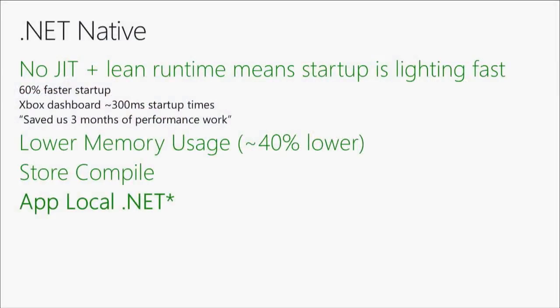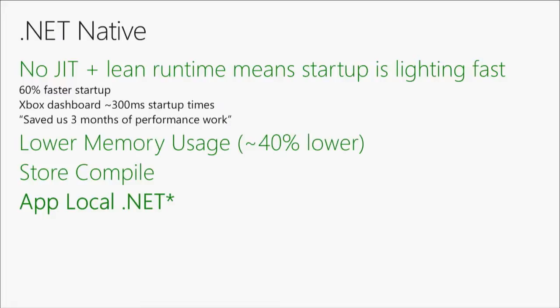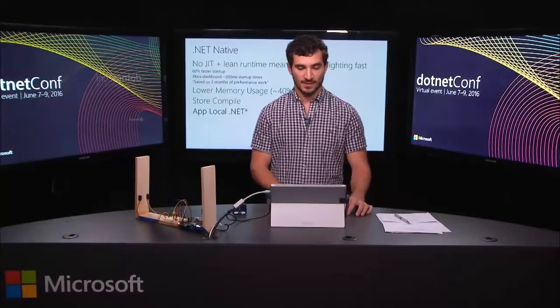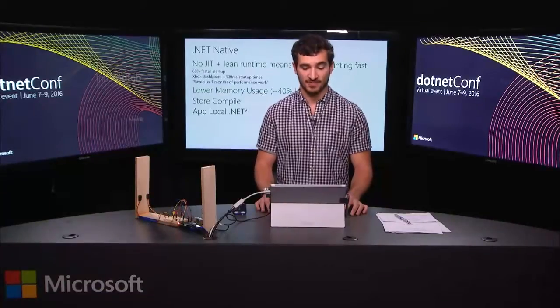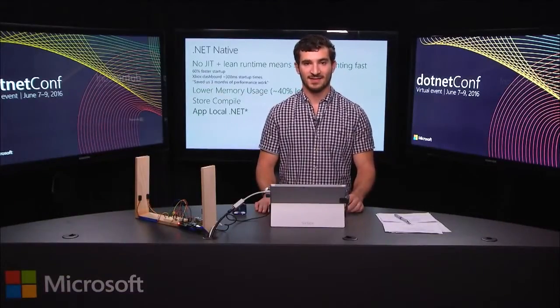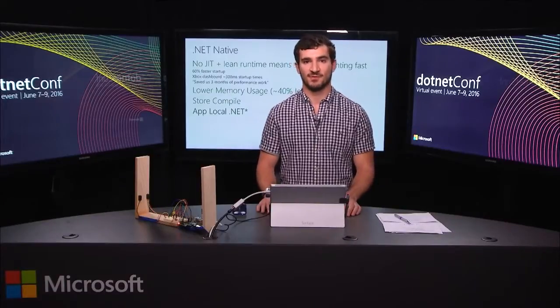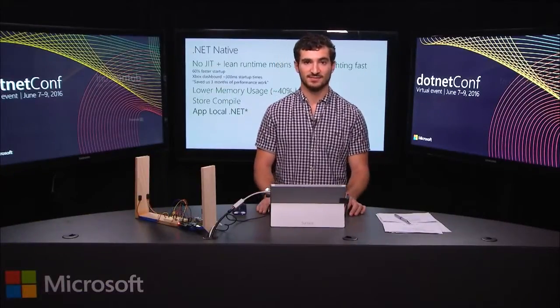The other key technology for UWP is .NET Native. .NET Native takes your MSIL binaries output from C# compilation and compiles them further to native binaries, eliminating just-in-time compilation at runtime. Everything is pre-compiled into your package, resulting in a much leaner runtime and lightning-fast startup. We've seen up to 60% faster startup with .NET Native-compiled packages. For example, the Xbox dashboard starts up in about 300 milliseconds. One customer said it saved them three months of performance work they would have had to do otherwise.